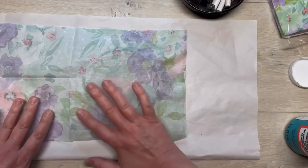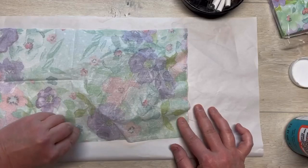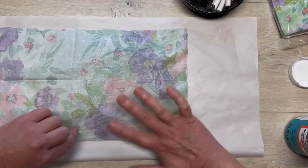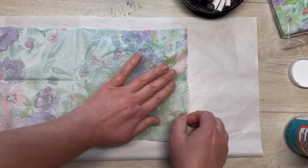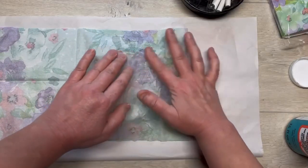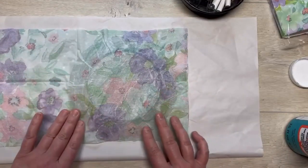Now I'm not being super careful about the wrinkles because I like that look. I don't know, it almost gives me like a pressed flower vibe. Does that make sense? But if you don't like the wrinkled thing, then be super careful and make it so that you don't get wrinkles. But all I'm doing is going around and lightly patting down so it adheres to the plate.